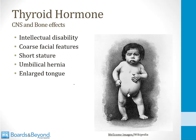Shown on screen is a child with cretinism. Clinical features include intellectual disability, coarse facial features, short stature, umbilical hernia, and a large tongue — all visible in this picture.